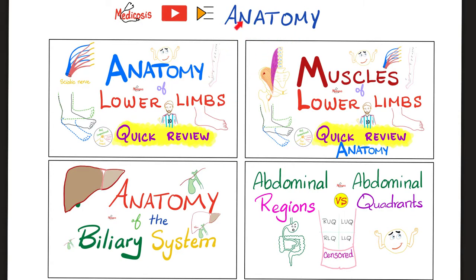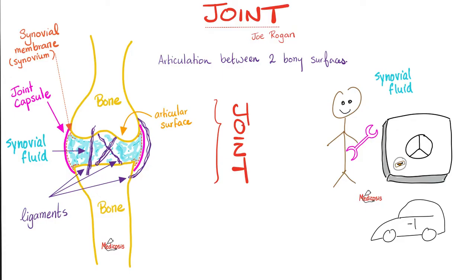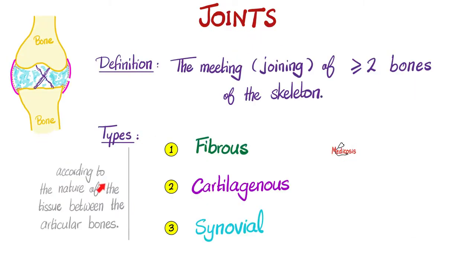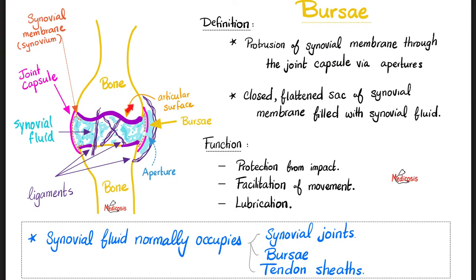Please try to watch the videos in this anatomy playlist in order. What's a joint? What's an arthro? It's an articulation between two bony surfaces, although Joe Rogan will have another definition for a joint. This picture illustrates a synovial joint, not a fibrous joint, because a fibrous joint does not have any cavity. Types of joints according to the nature of tissue between the articular bones: fibrous, cartilaginous, and synovial joints. The synovial joint has synovial fluid, and this synovial fluid will exist within the joint capsule and also spread to the bursae.